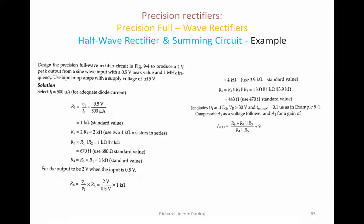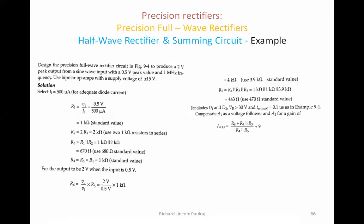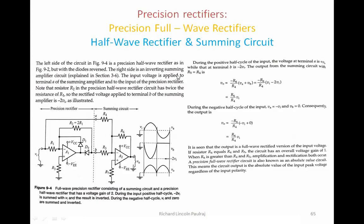Having all that background in mind, today we will continue with precision rectifiers and solve an example. These examples won't come for your exam, but for your understanding of how circuits are designed and optimized. Design the precision full-wave rectifier circuit, circuit 9.4, which has two sections: a precision rectifier and a summing circuit. It is a summing circuit because we are giving different inputs via R4 and R5 to the inverting terminal.